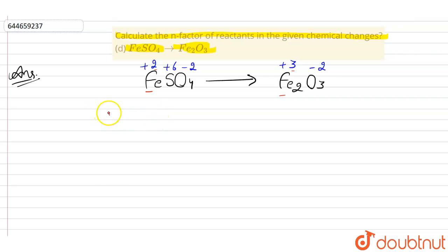So it is the redox reaction and for redox reaction the n factor is equal to the change in oxidation state. So therefore here the iron Fe is changing from plus 2 to plus 3 as here seen in the equation.